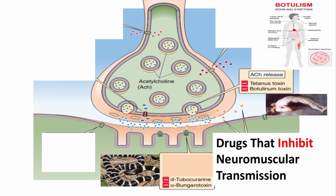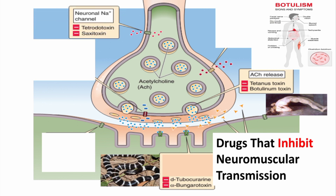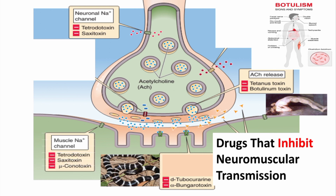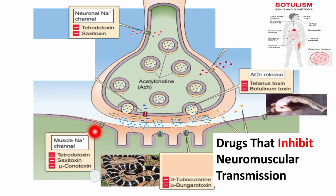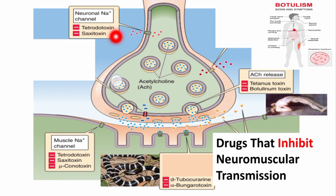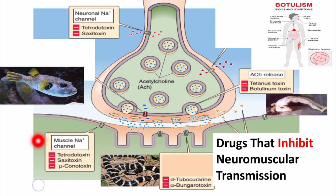Third, there are sodium channel blockers which act on sodium channels present on the axon terminal or on the sarcolemma, blocking them and thereby preventing the action potential. Examples of such toxins are tetrodotoxin and saxitoxin. Can you tell me what is the relation of tetrodotoxin with this fish? You can give your answer in the comment box.